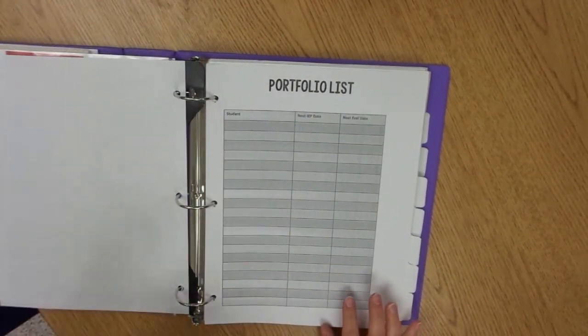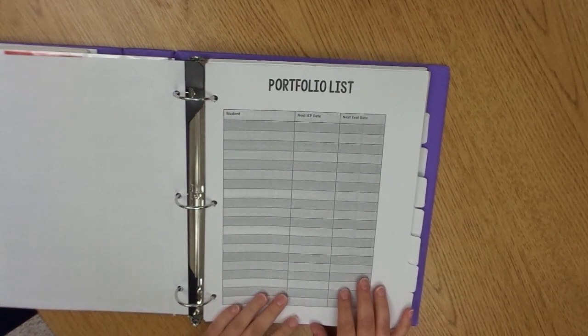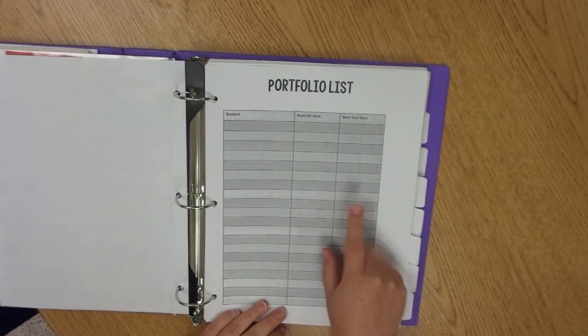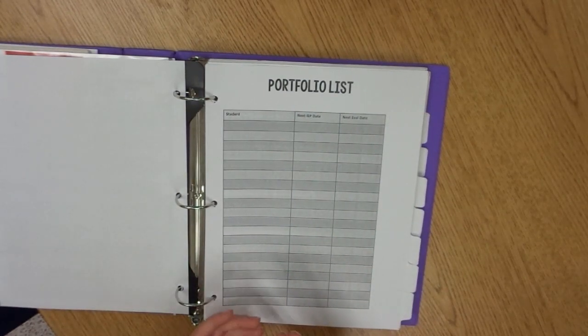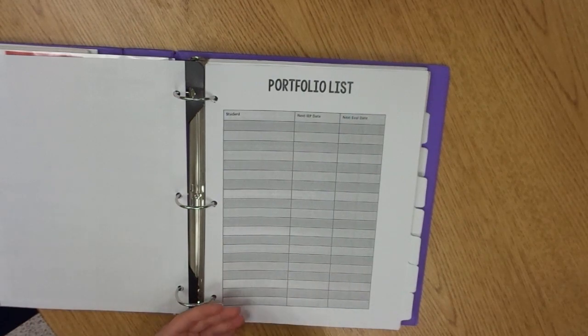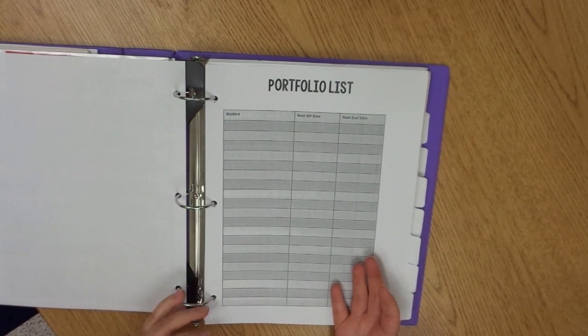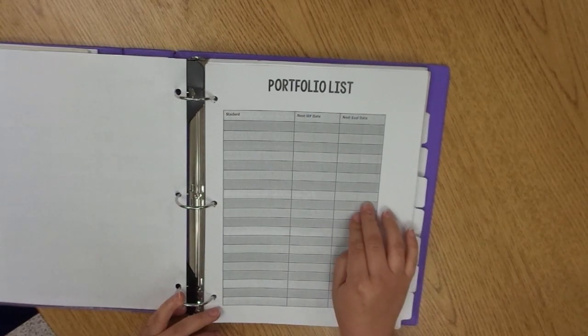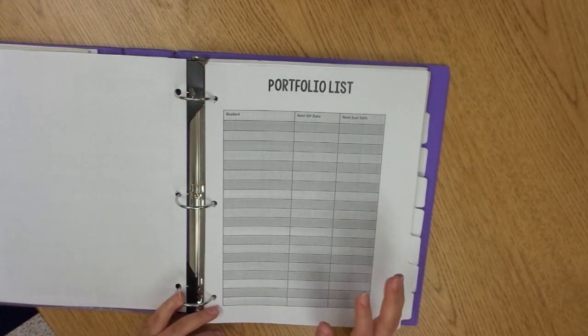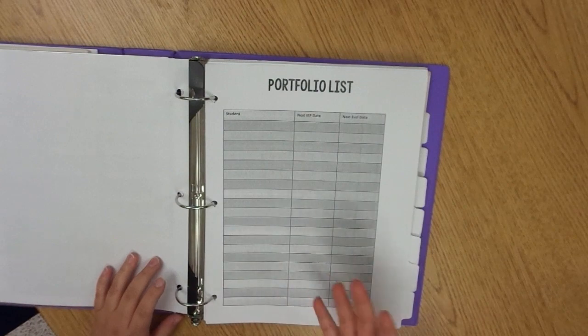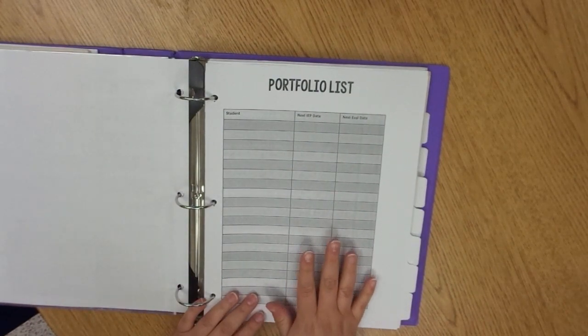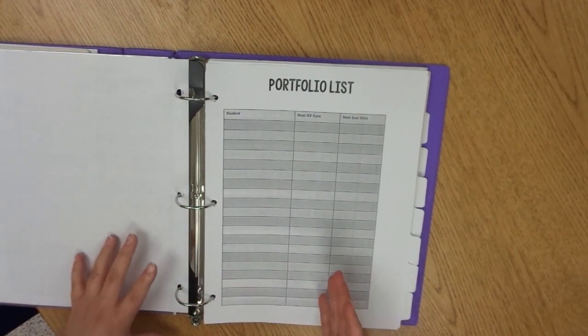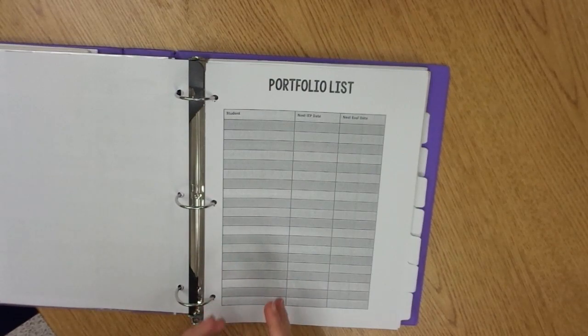The next thing in here that I find very helpful is my portfolio list. So these are going to be all of my students listed in this column, their annual review date, and their next evaluation date. In the state that I live in, students eligibility for special education services is reviewed every three years. And since I can get students at the age of two, sometimes I will have them at that third year mark. And so I need to make sure that's written down because we do have to go to the special education committee to determine eligibility purposes. So dates are the most important thing when it comes to your IEPs. You certainly don't want to go beyond that annual date and you want to make sure that you are in compliance for all of your dates.